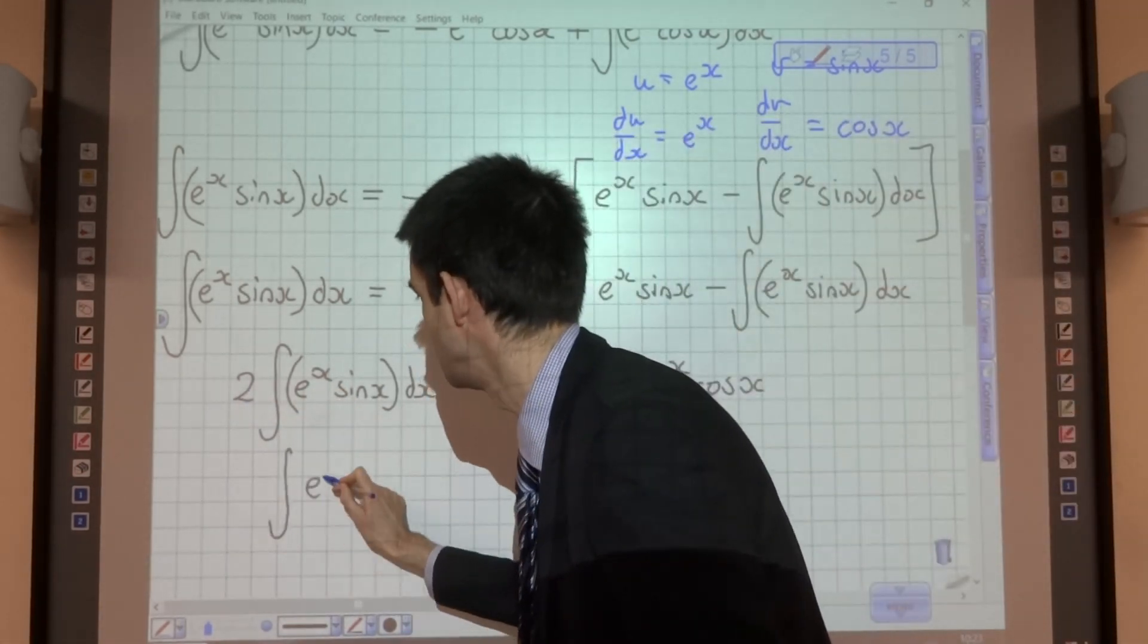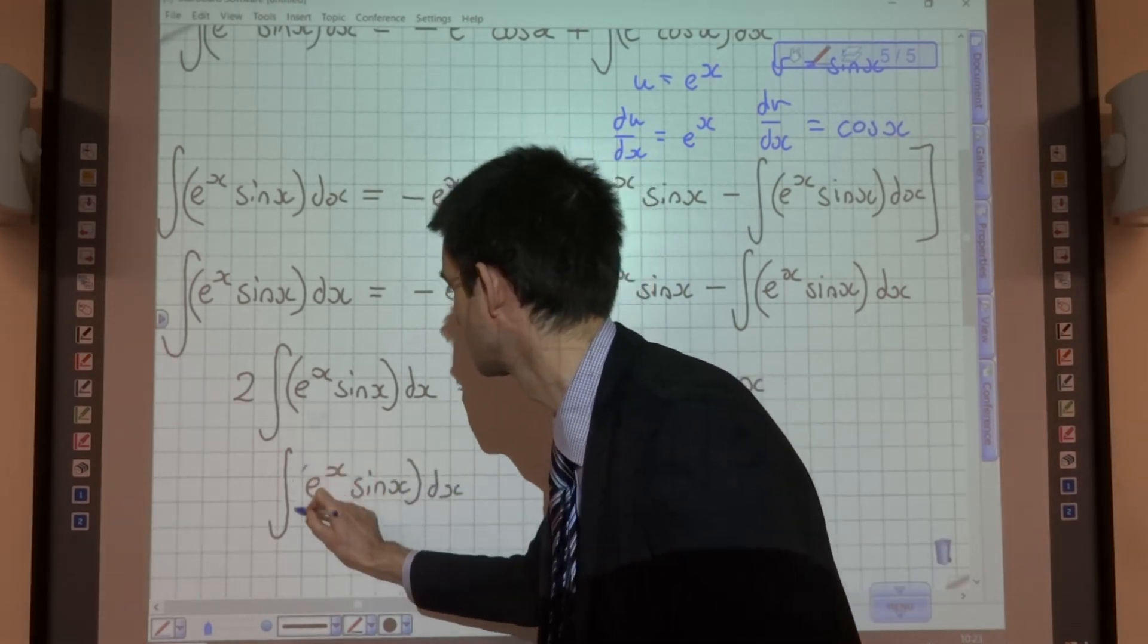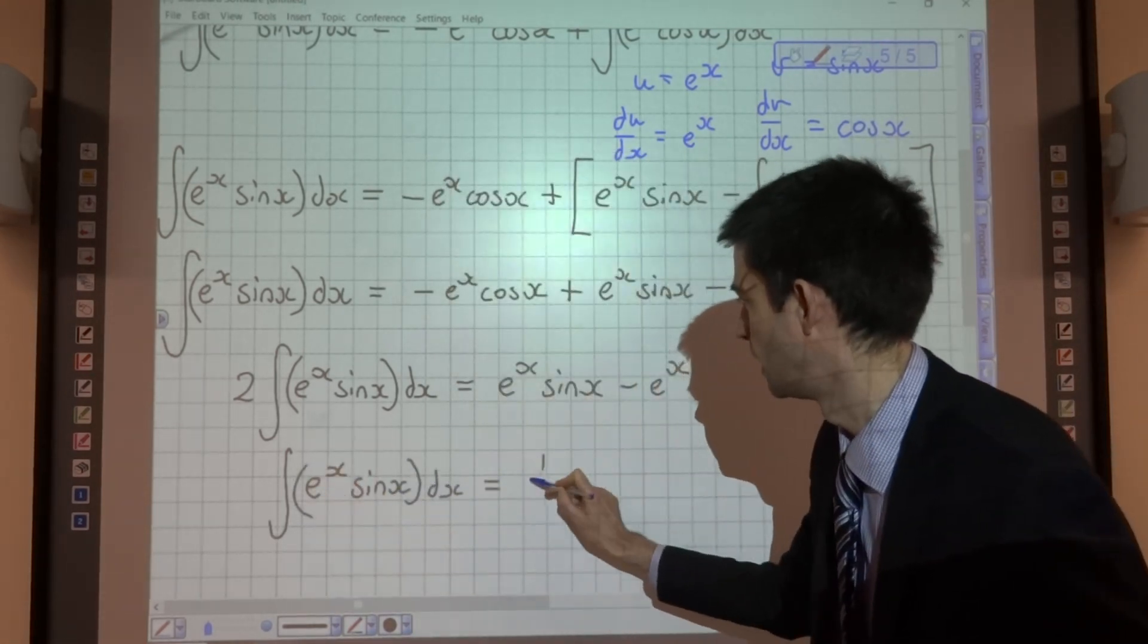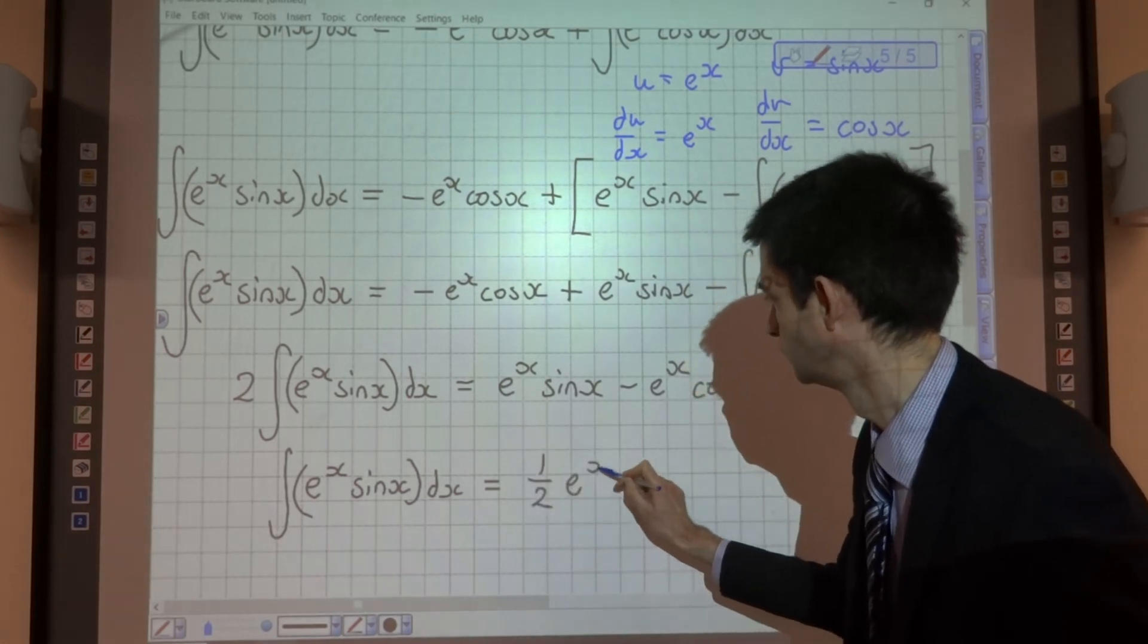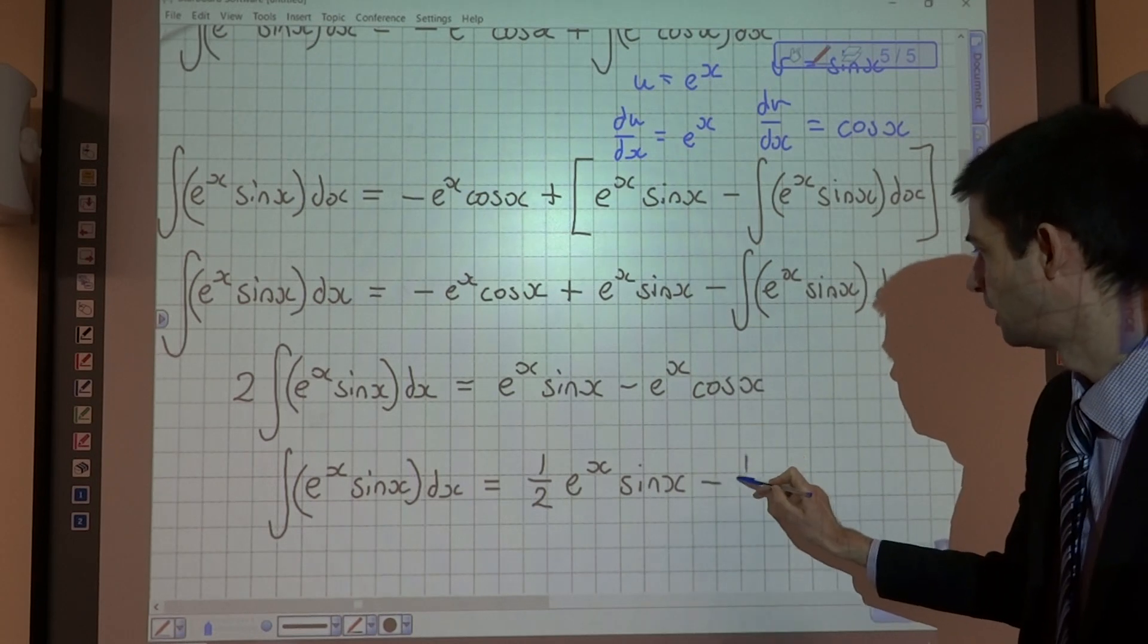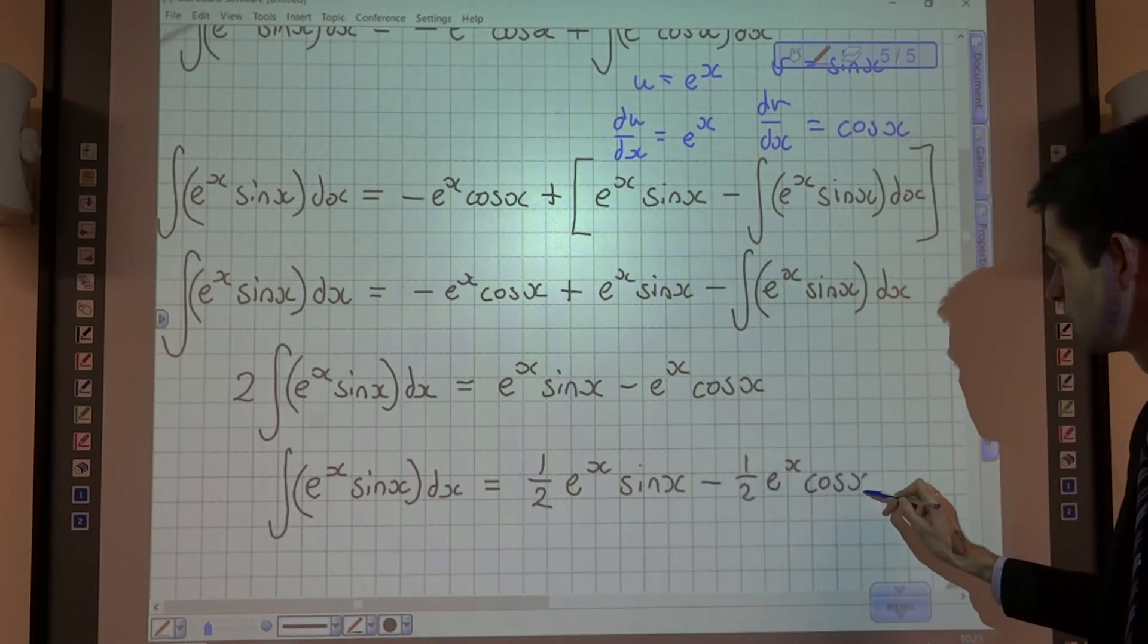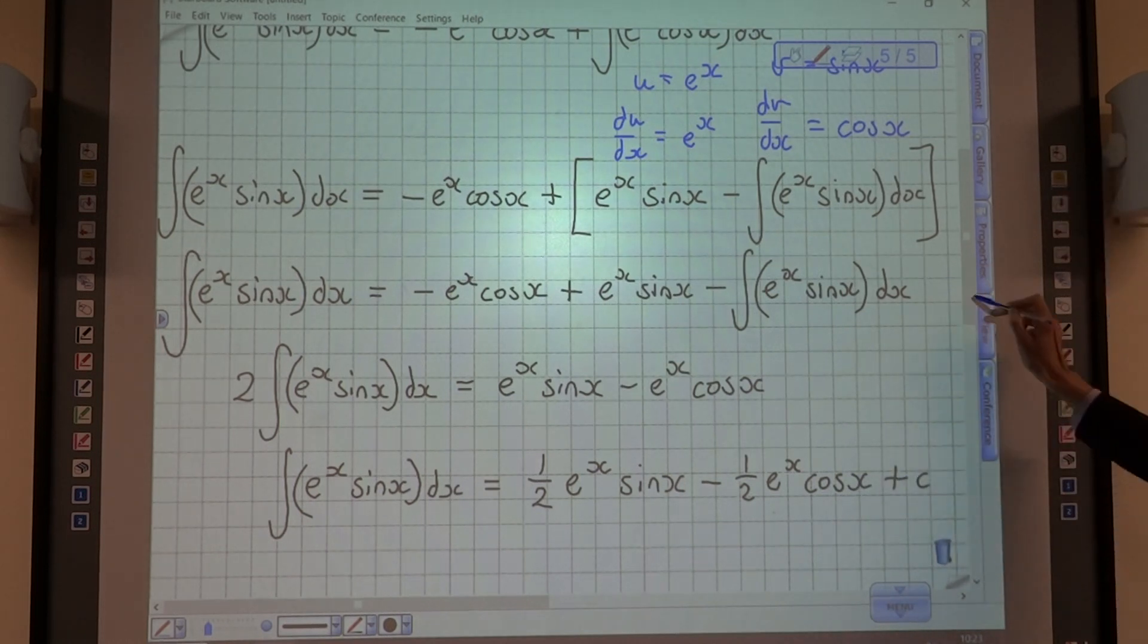So that means that the integral of e to the x sin x is equal to a half e to the x sin x minus a half e to the x cos x. And not forgetting the plus c.